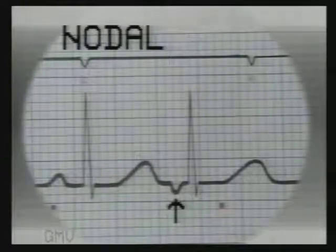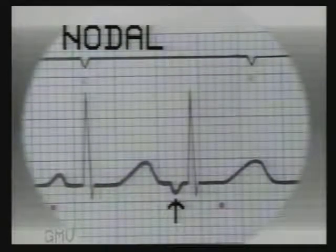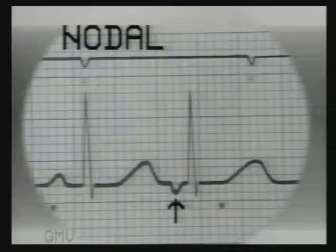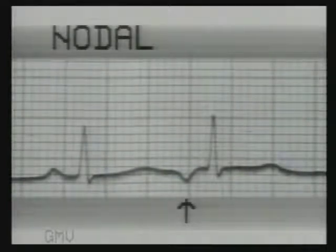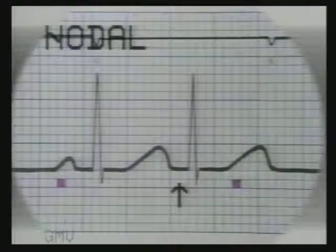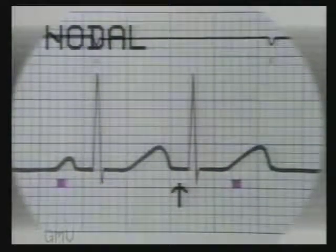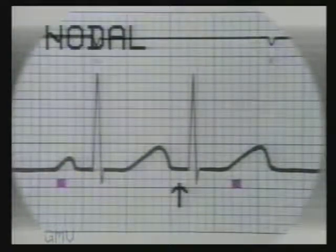This premature beat has an inverted P-wave with a very short PR interval — this is a nodal premature beat. The P-wave is inverted as the impulse travels in the reverse direction in the atrium, and the PR interval is short because the nodal delay in conduction is eliminated. Note the upright P-wave of the previous sinus beat and inverted P-wave of the premature beat indicating nodal origin. This premature beat has no P-wave and is also a nodal premature beat. If the impulse arises in the lower part of the AV node, the P-wave will be delayed and may occur with the QRS complex or even after it — in this case it has occurred with the QRS complex and hence is not seen.